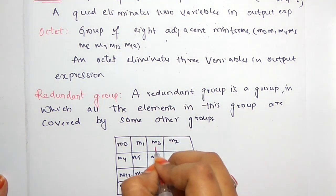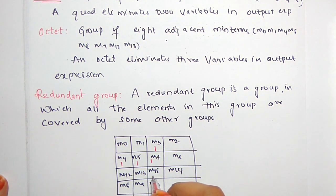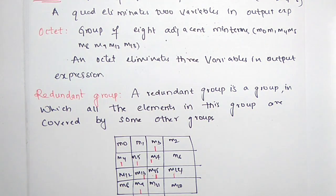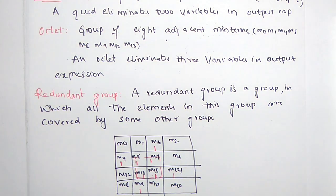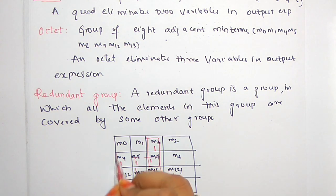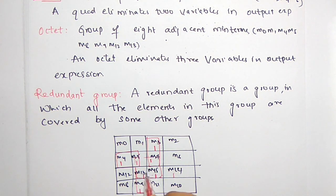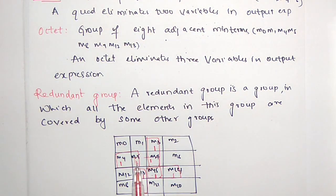I am marking pairs on the K-map. For example, like this and like this. This makes a quad. And this is a pair, this is a pair, this is a pair, this is a pair. The four minterms M5, M7, M13, M15 are forming a quad.